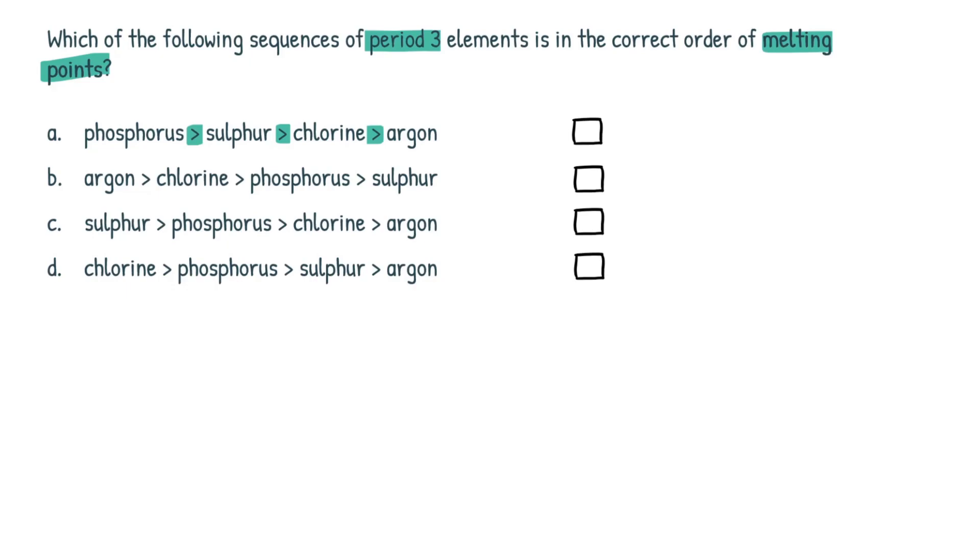The next thing is your brain should automatically think whenever you see melting point or boiling point, intermolecular forces. Okay, this should be the first thing that pops into your head. So all we have to do here is look at the sequence of elements and think to ourselves, what intermolecular forces are present?